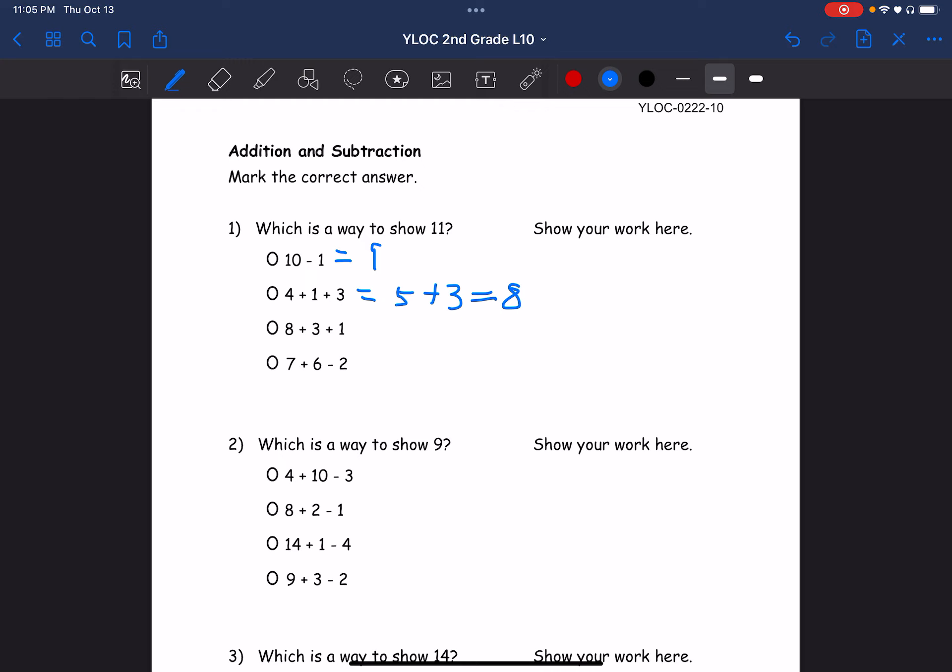Alright, 8 plus 3 plus 1, that's 11... wait, plus 1, backtracking, we have 12, that's not the answer either. We have 7 plus 6 minus 2, so that's 13 minus 2, and that's 11. So the answer is this one.